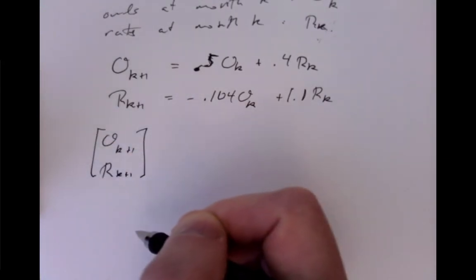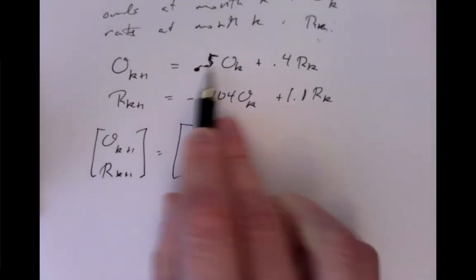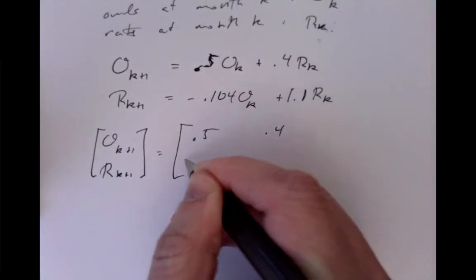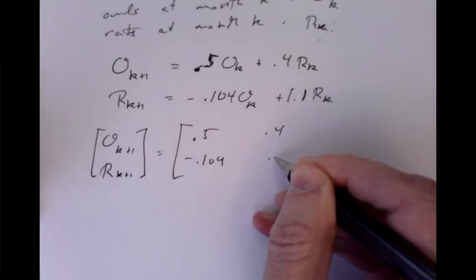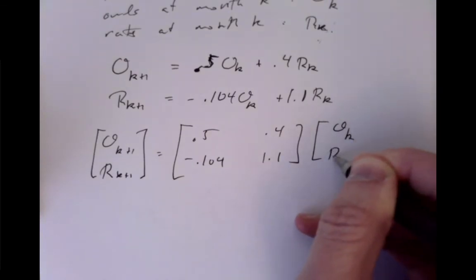Next month's vector is going to be a matrix of numbers. These numbers here, 0.5, 0.4, minus 0.104, and 1.1, times last month's owl and rat data.